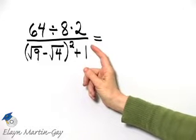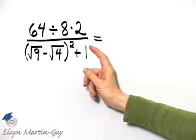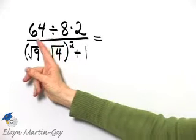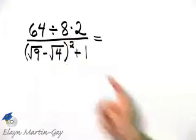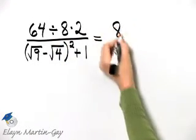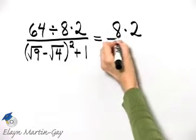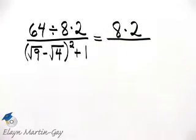Remember, we multiply or divide in order from left to right. So we will divide first. And 64 divided by 8 is 8. So I have 8 and then times 2 so far above the fraction bar.